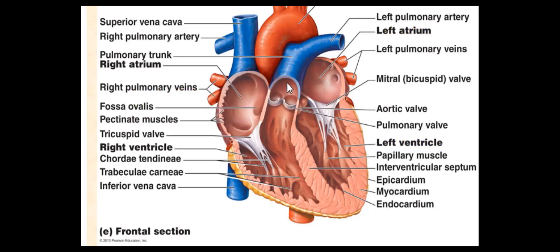Before discussing the remaining two chambers of the heart, the ventricles, take note once again of the same thickness of the myocardium for both the right and left atria. Both the right and left atria contract at the same time. And when they do, they both generate approximately the same force of contraction and pressure. The blood that remains in the atria will be pumped into the ventricles as these two chambers simultaneously contract.